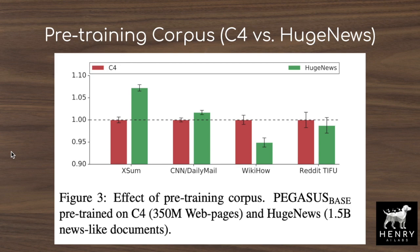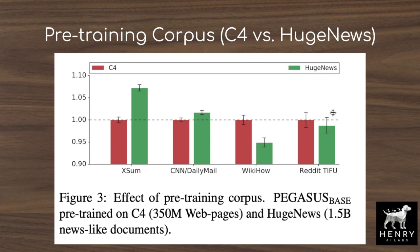The ablation comparing C4 and HugeNews showcases the core idea of Pegasus. For downstream tasks like XSum, pre-training on HugeNews gives a substantial benefit over C4, although HugeNews isn't better for all abstractive summarization tasks. This illustrates a no-free-lunch theorem: the pre-training objective and the pre-training data set both matter, and the pipeline is still open for exploration depending on your downstream summarization task.